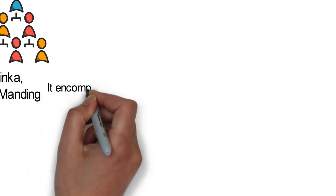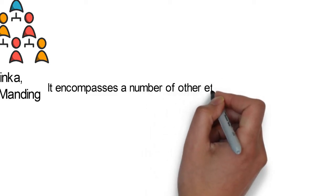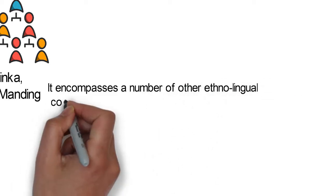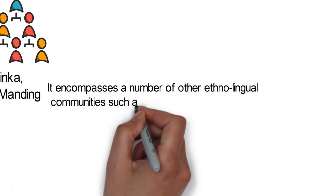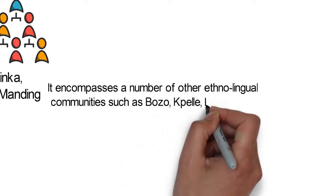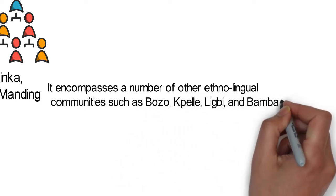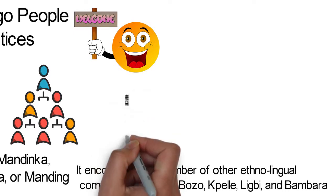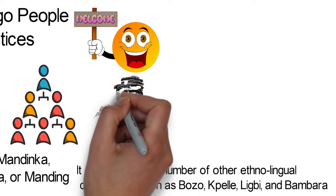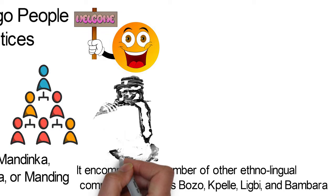The Mandingo people are a branch of the Mande ethnic group which encompasses a number of other ethno-lingual communities such as Bozo, Pele, Ligbi, and Bambara. They speak Mandinka Kango from the Niger-Congo family of languages.